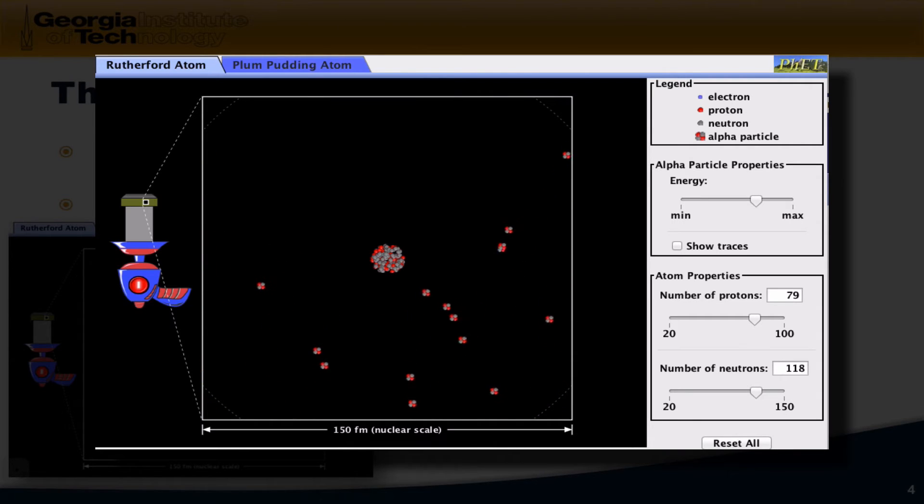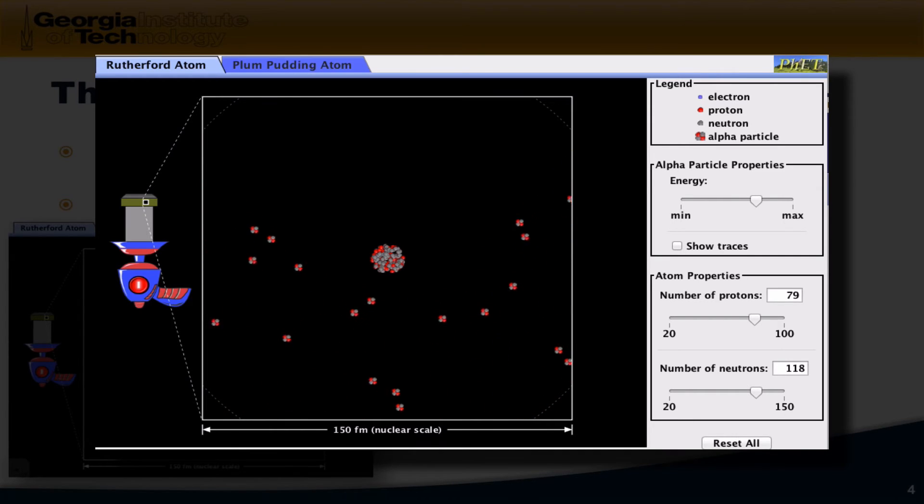You can see many of the alpha particles are simply going right past. A few of the particles bounced back, and that indicated to Rutherford that there was a very small, very concentrated region of positive charge within the atom, which he called the nucleus. Of course, we now know that the positive particles within the nucleus are called protons, and we also find neutral particles with the same mass as the proton known as neutrons in the nucleus.